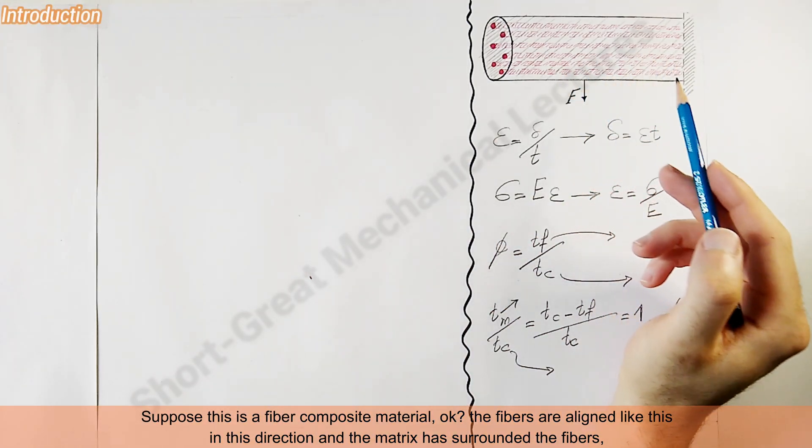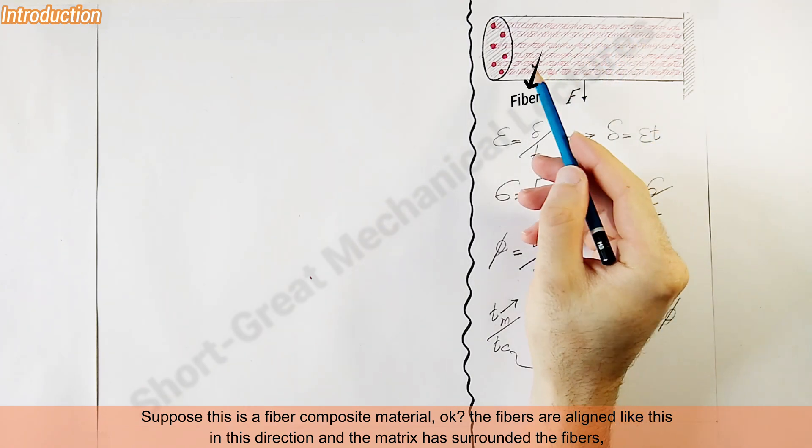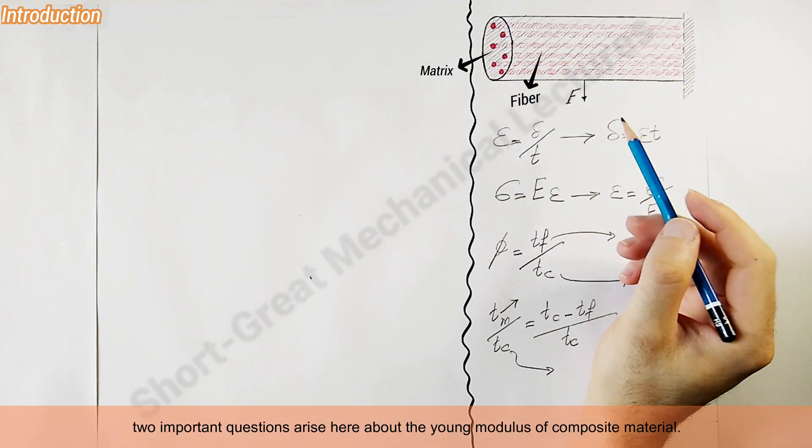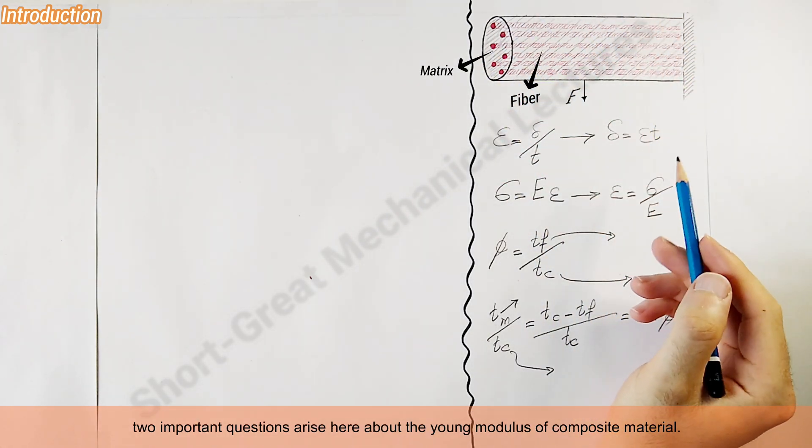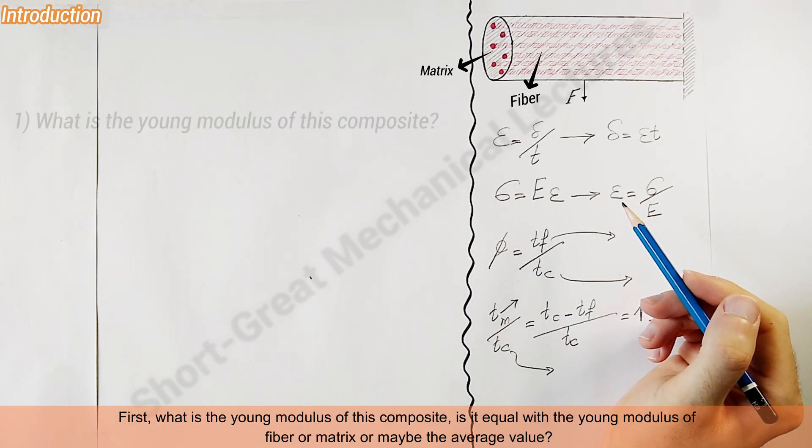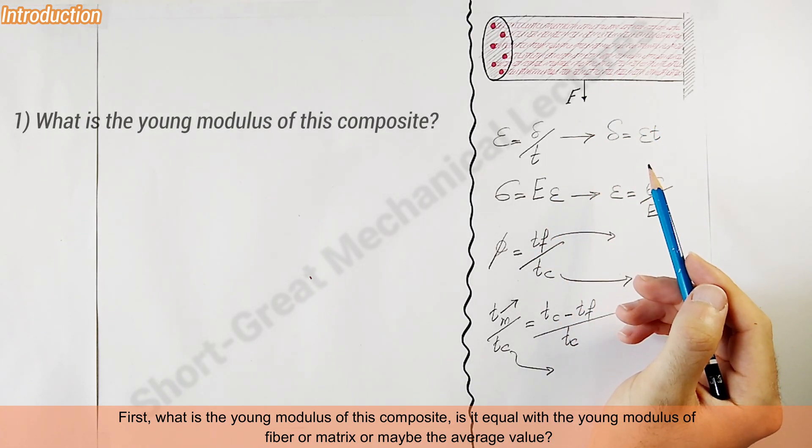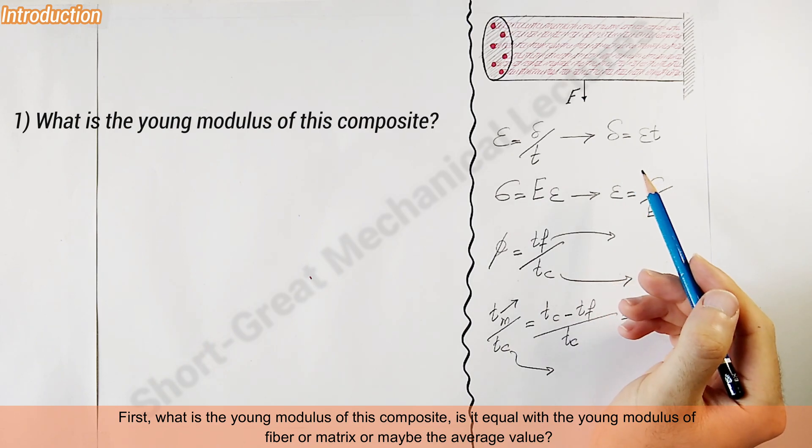Suppose this is a fiber composite material where the fibers are aligned in this direction and the matrix has surrounded the fibers. Two important questions arise here about the Young's modulus of composite material. First, what is the Young's modulus of this composite? Is it equal to the Young's modulus of fiber or matrix, or maybe the average value?